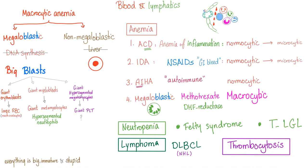Blood and lymphatic disorders in Rheumatoid Arthritis. First, let's do the lymphatic, because they are easy. We have neutropenia, such as Felty syndrome and TLGL — T-cell Large Granular Lymphocytic Syndrome. We'll talk about Felty in a later video. Rheumatoid arthritis can raise your risk of lymphoma — specifically Non-Hodgkin's lymphoma, and even more specifically, Diffuse Large B-cell lymphoma.